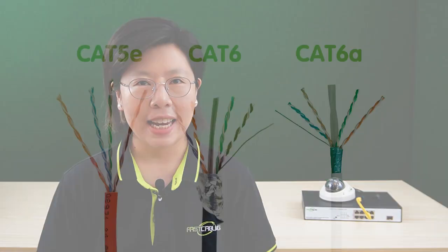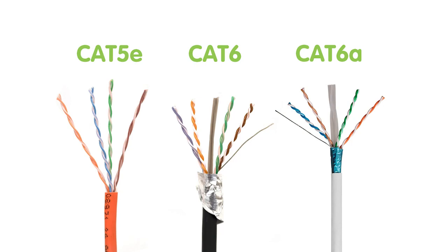This technology streamlines installations, enhancing efficiency and convenience in different applications by eliminating the requirement for additional power cables and adapters. PoE operates by transmitting electrical power and data simultaneously over an Ethernet cable, simplifying device connectivity. This method eliminates the need for separate power lines, enhancing convenience and reducing clutter. PoE involves careful management of voltage, current, and power levels to ensure safe and efficient transmission. Ethernet cable categories such as Cat5e, Cat6, and Cat6a play a crucial role.